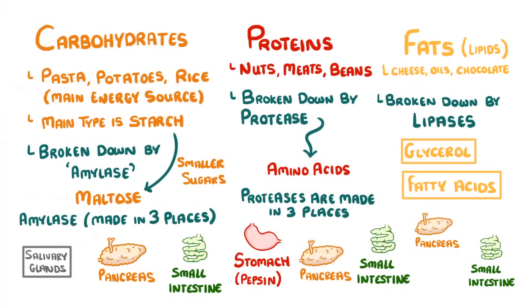Now, if you think it's going to be difficult to remember where each enzyme is made, just remember that all of them are made by the pancreas and the small intestine, with amylase also being made by salivary glands, and proteases also being made in the stomach.